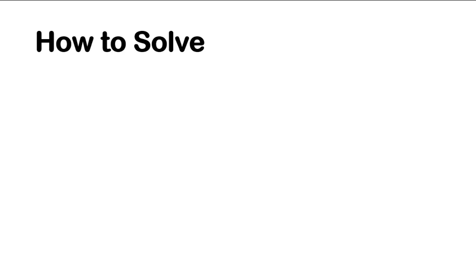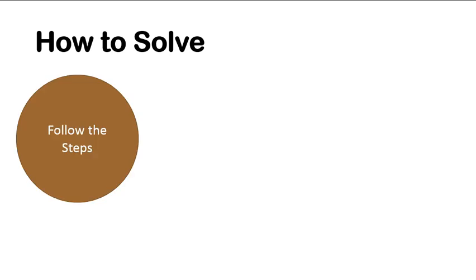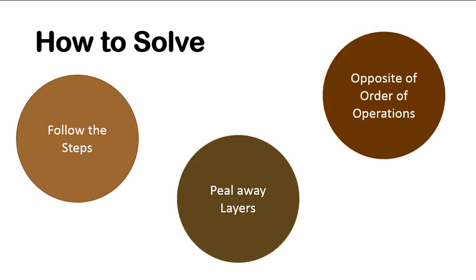Quick recap on how to solve. You follow the steps. Those 3 steps that are listed will always lead you to a good place. Follow those steps and you will be able to solve them. Also I like to say peel away the layers. Some people like to say do the opposite of the order of operations. Both ways will work for you and get you the correct answer. Hope that lesson was helpful for you curious learners. Have a wonderful day.